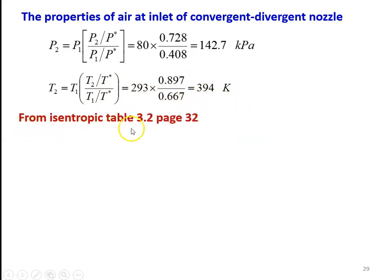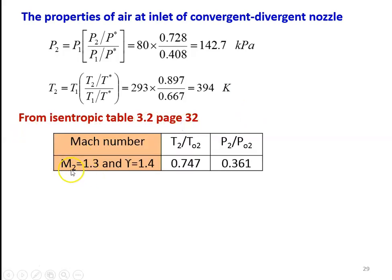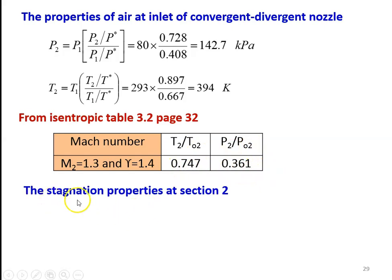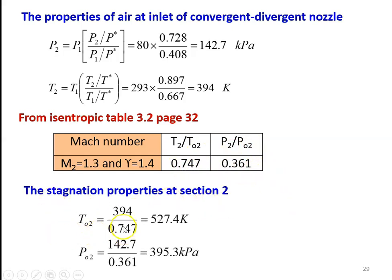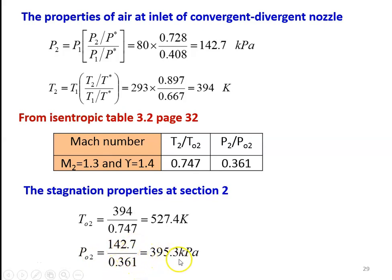From the isentropic table, table 3.2, page number 32, for Mach number M2 equal to 1.3 and gamma equal to 1.4: T2 by TO2 equal to 0.747, P2 by PO2 equal to 0.361. The stagnation temperature at section 2: TO2 equal to 394 divided by 0.747, equal to 527.4 Kelvin. Stagnation pressure at section 2: PO2 equal to 142.7 divided by 0.361, equal to 395.3 kilopascal.